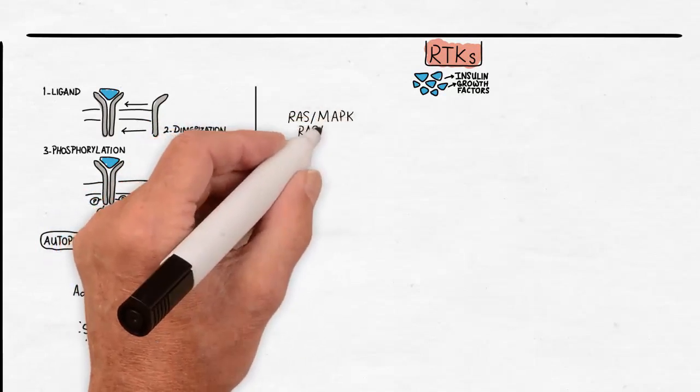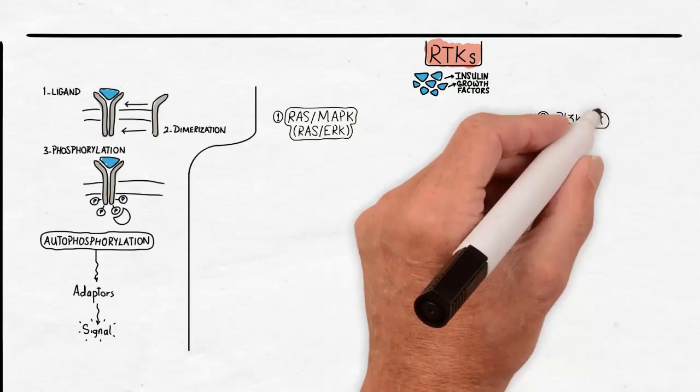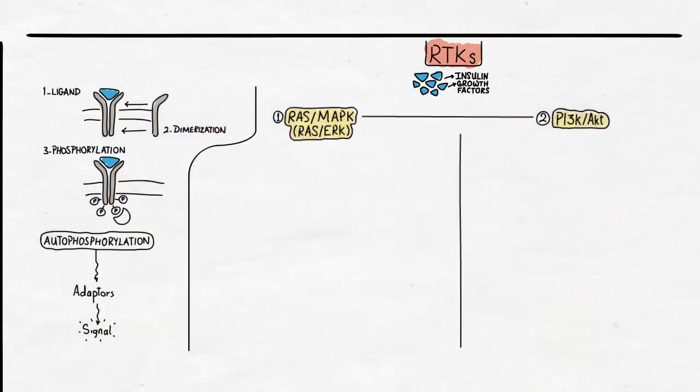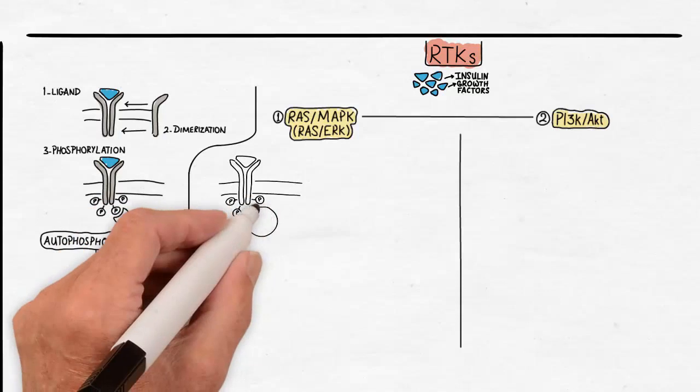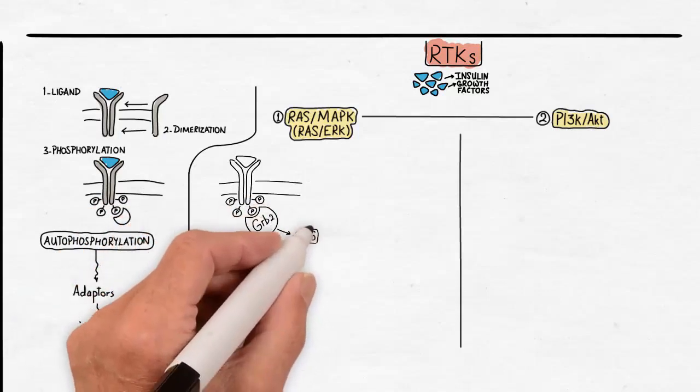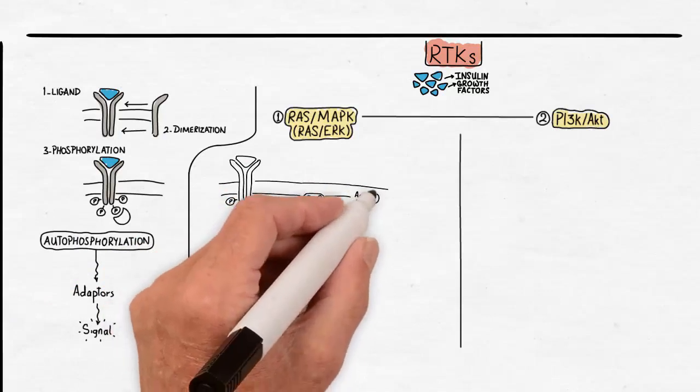The two major types of RTK signaling are the RAS-MAP kinase, or the RAS-ERK pathway, and the PI3K-AKT pathway. In the RAS-MAP kinase pathway, the first adaptor protein that binds to the phosphorylated tyrosine residues of the receptor is the GRB2. The GRB2, upon binding, activates another protein called SOS, or Son of Sevenless.